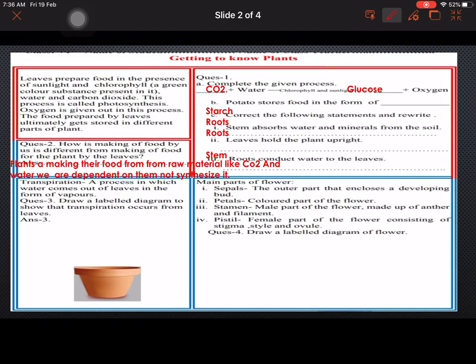Stem absorbs water and minerals from the soil - instead of stem you will write roots. Leaves hold the plant upright - here also you will write roots instead of leaves. Roots conduct water to the leaves - instead of fruit you will write stem.